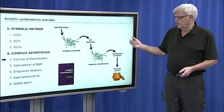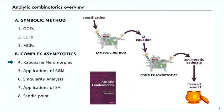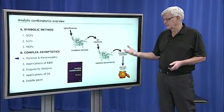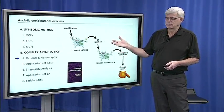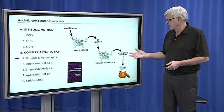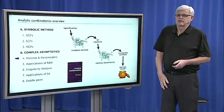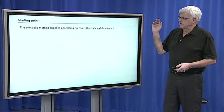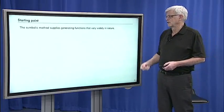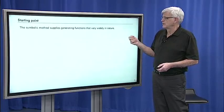This is our standard overview. We've finished the first part of the course on the symbolic method, and now we're going to start into complex asymptotics, where we're going to have machinery that we can use to take a generating function equation and get out asymptotic estimates of the coefficients automatically. Today we're going to talk about rational and meromorphic functions, and we'll talk about what those are in just a minute.